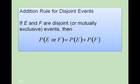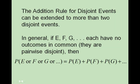This leads us to the addition rule for disjoint events: if E and F are disjoint or mutually exclusive events, then P(E or F) = P(E) + P(F). This rule can be extended to more than two disjoint events. In general, if E, F, and G each have no outcomes in common — they are pairwise disjoint — then P(E or F or G or more) equals the sum of those individual probabilities.